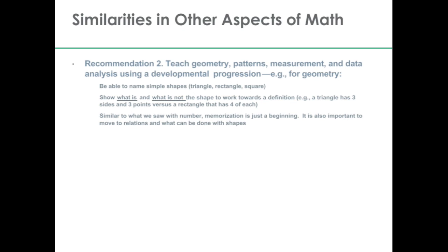The research seems to show that negative examples — what isn't the shape — are actually very helpful in defining these categories of what's a triangle or a rectangle. So in showing a child that a triangle has three sides and three points or vertices, it's also useful to show what isn't a triangle — to show a rectangle, show that it has four sides, and that makes it not a triangle. So the negative evidence seems to be very important in trying to show children what the categories actually are and what belongs to them.